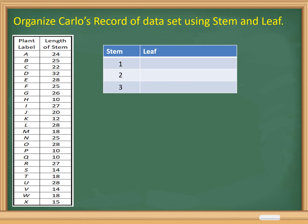Step 2: write the trailing digits. The longest stem measurement is 32 millimeters, so the trailing digit is 2 — that is the second digit of 32. The next values include 24, 35, 22, 28, and 25, and so on.